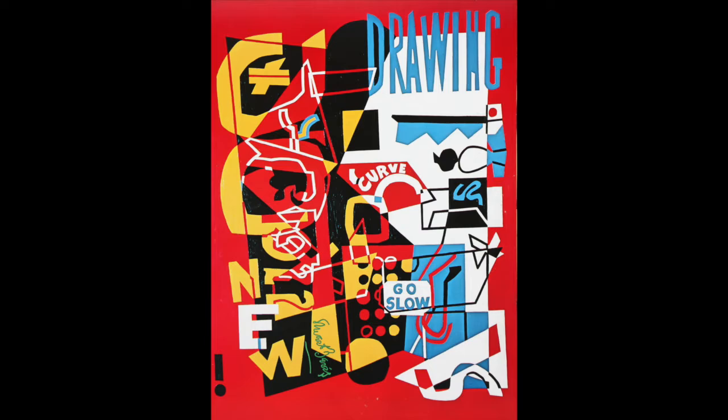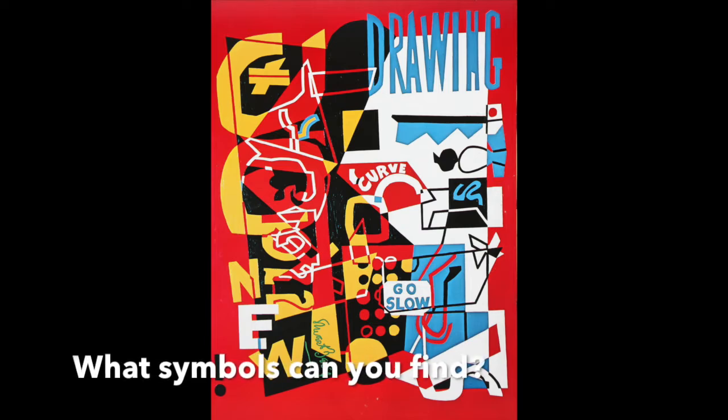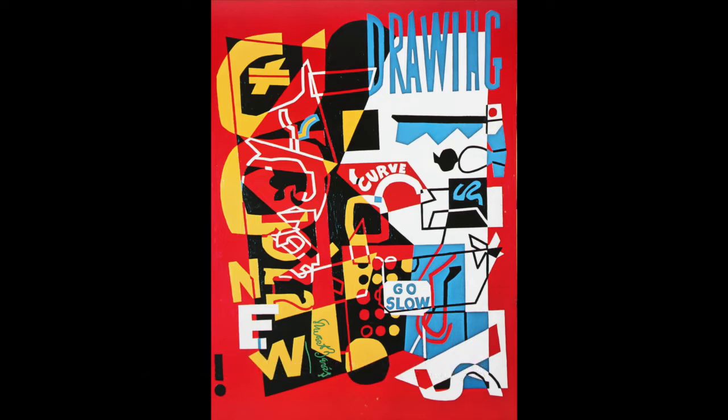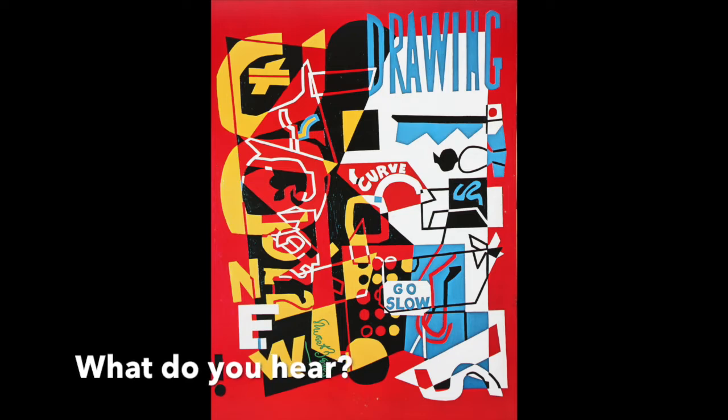The artist Stuart Davis used many symbols in this painting. What symbols can you find and what do they remind you of? What do you hear when you look at the print? Davis said that this painting was a collage of a landscape that he painted years earlier. He hid 1922, the date of his earlier painting, in the collage. See if you can find it.